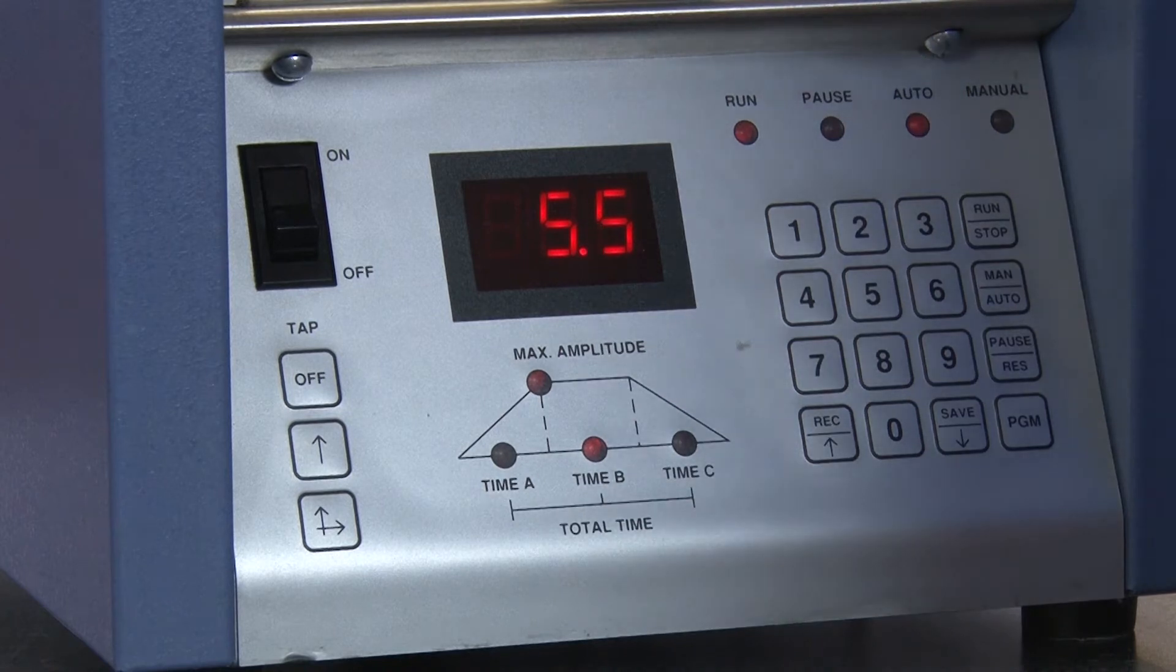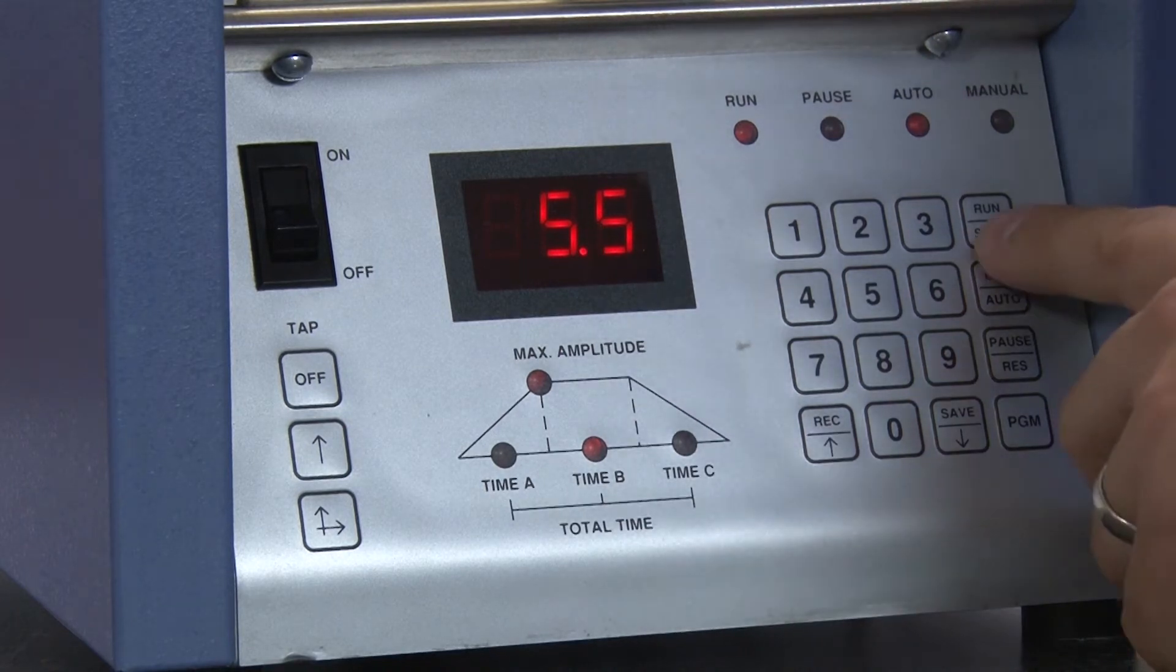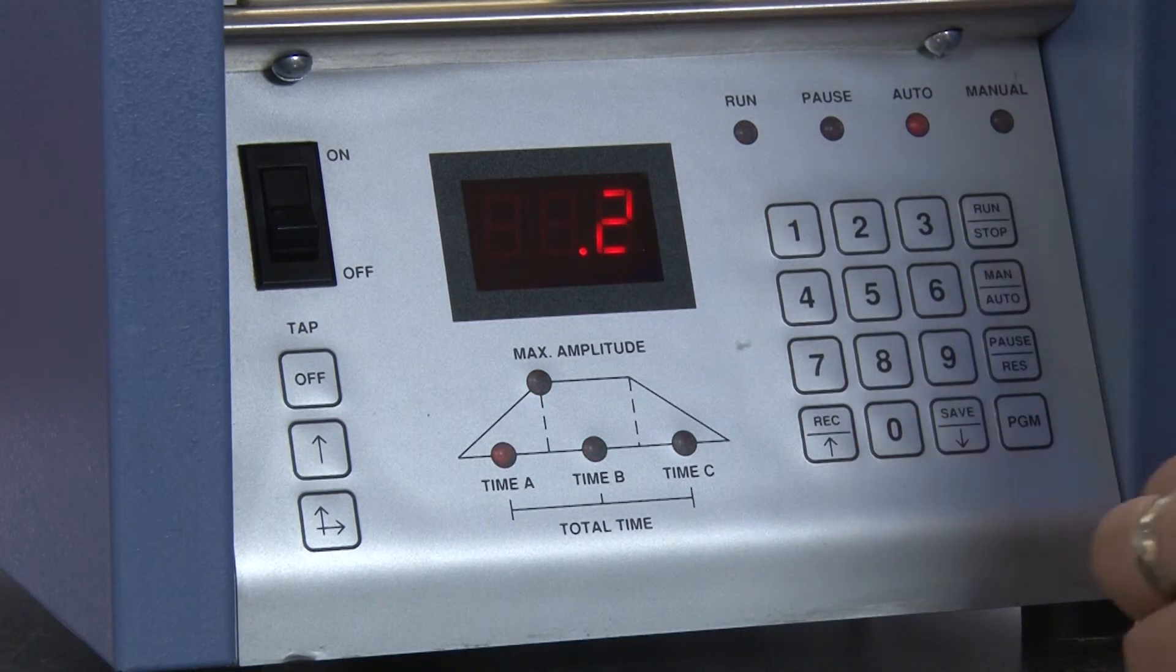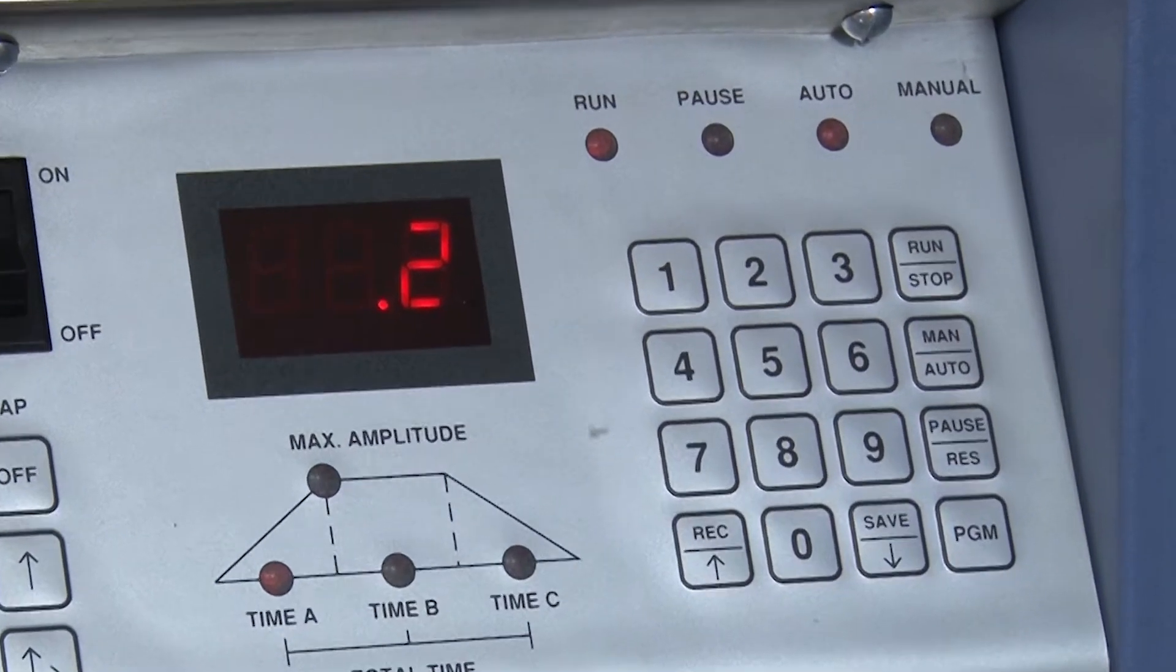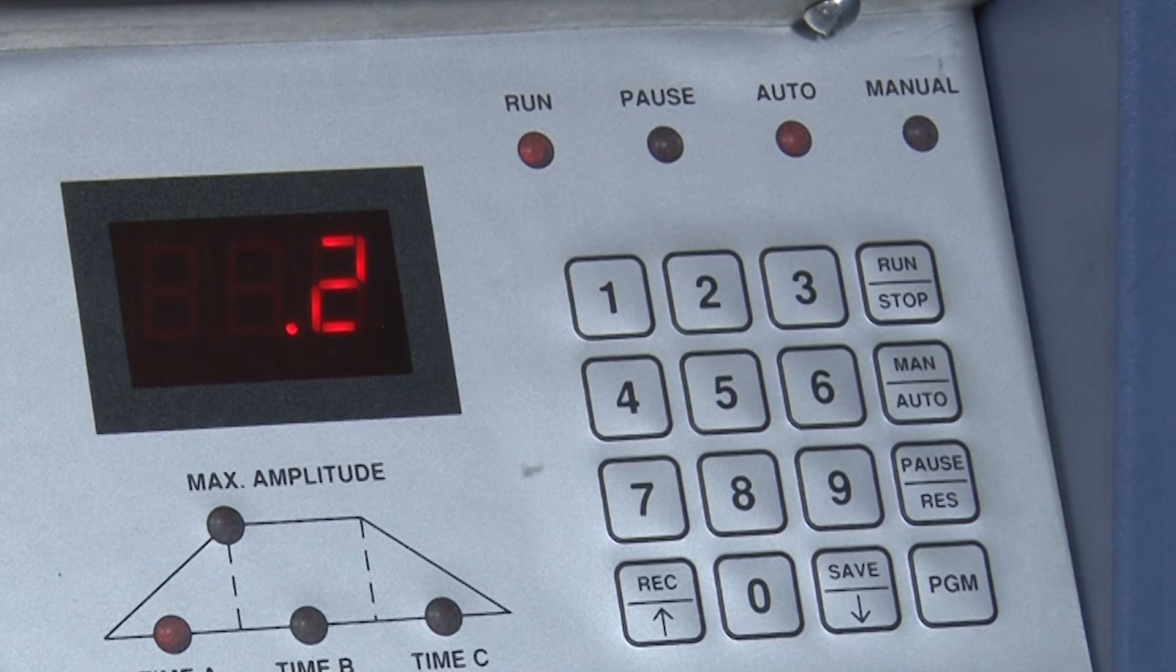If Stop is pressed during a sequence, the GA6 will abort the test. If the Run Stop button is pressed again, the same test program sequence will be initiated from the beginning.